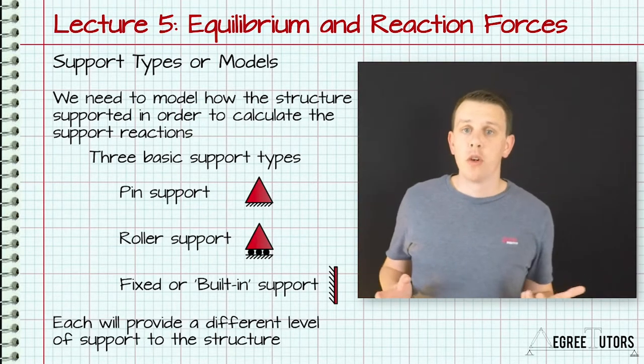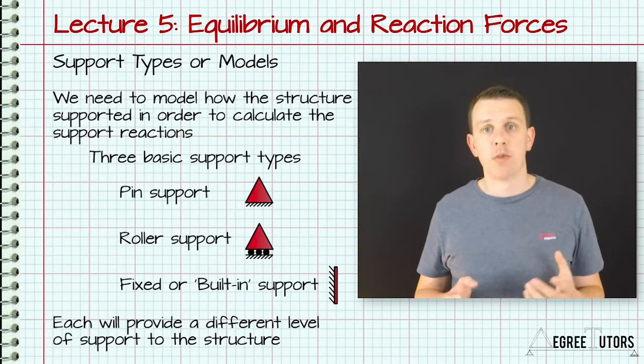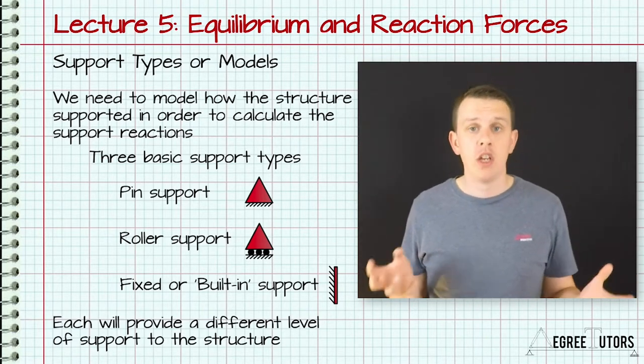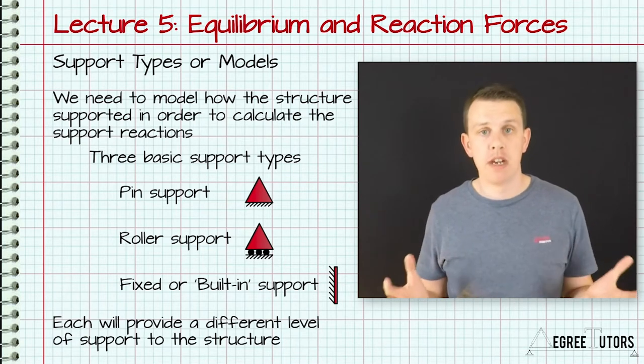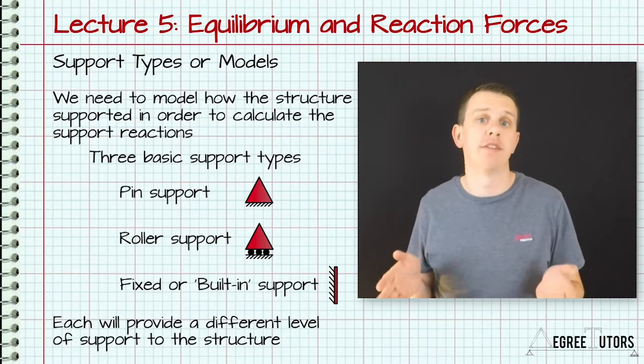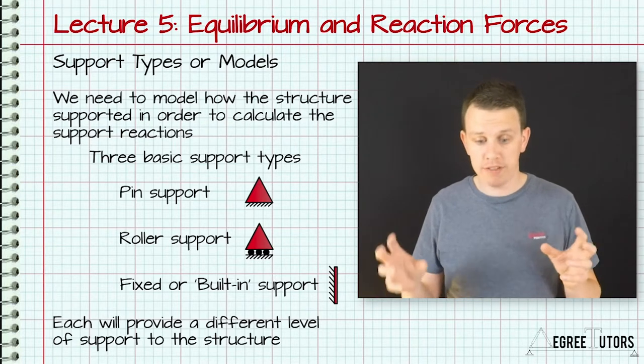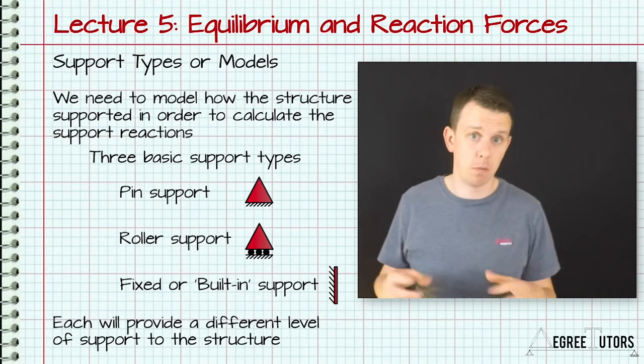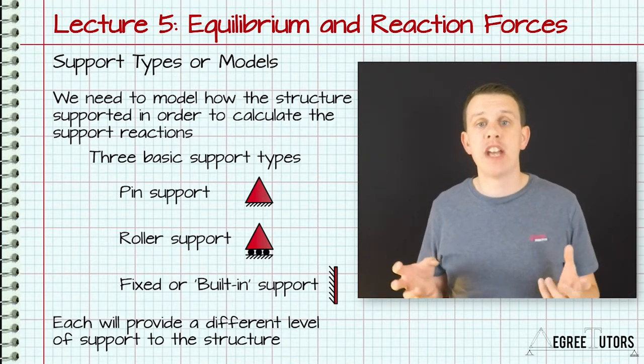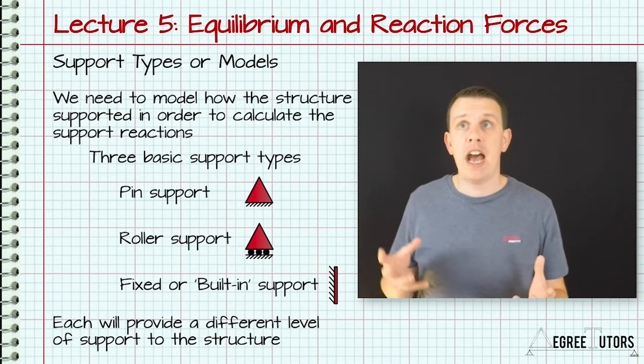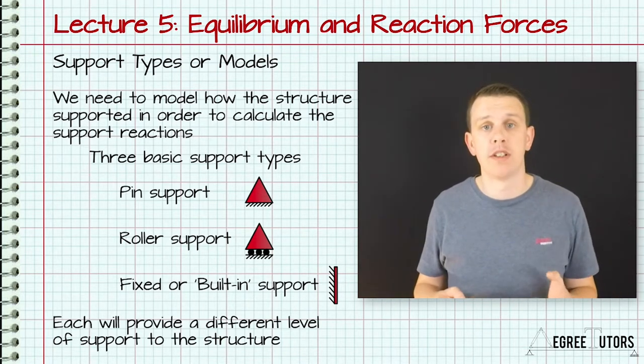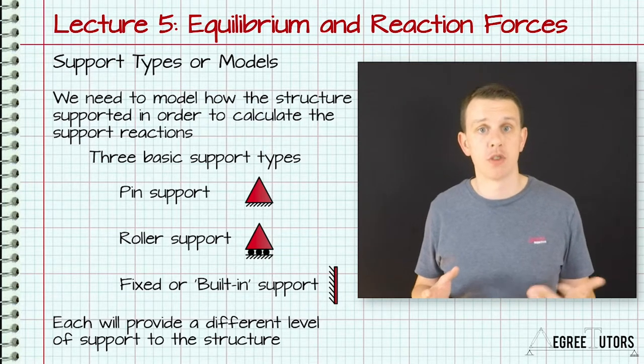When analyzing real world structures, one of the biggest uncertainties arises from not knowing how the actual supports for our structure are going to behave. To try and cope with this variability in real world supports, we say that a support is going to behave in one of three different ways. These three different idealized support conditions allow us to generate different combinations of reactions. They also crucially allow different types of movement at the support and that has really important implications for structural stability.